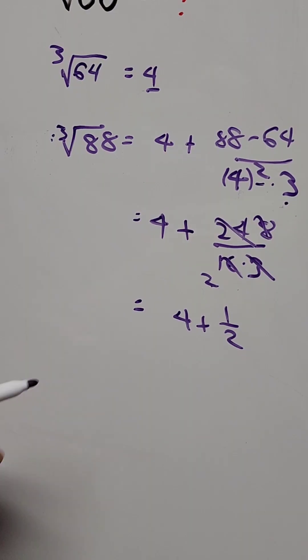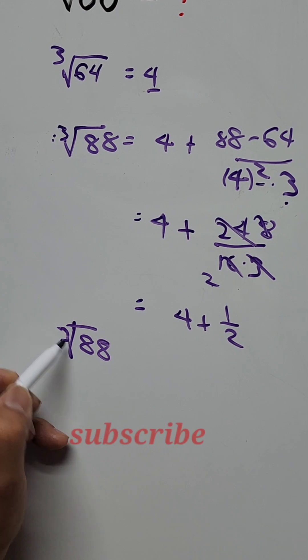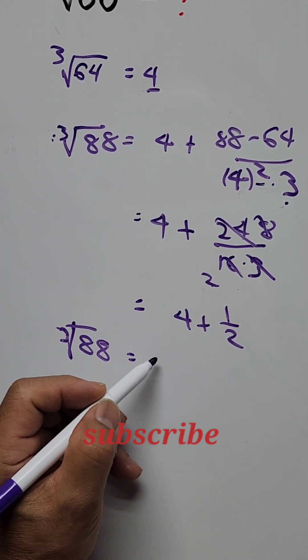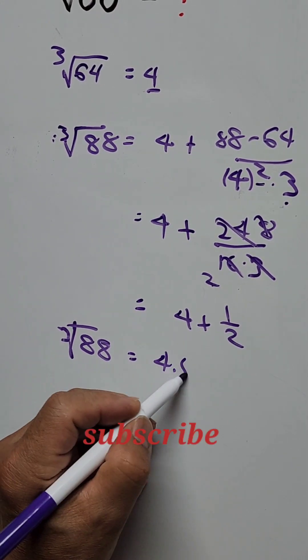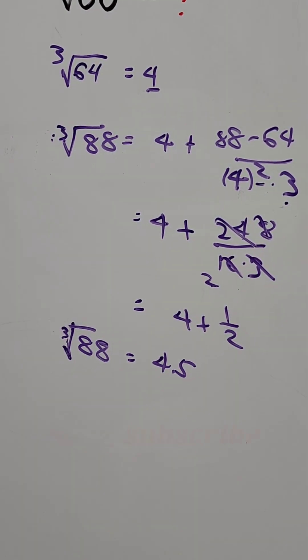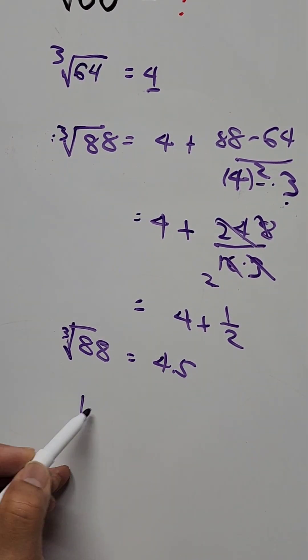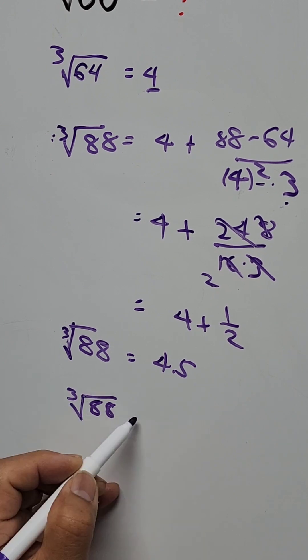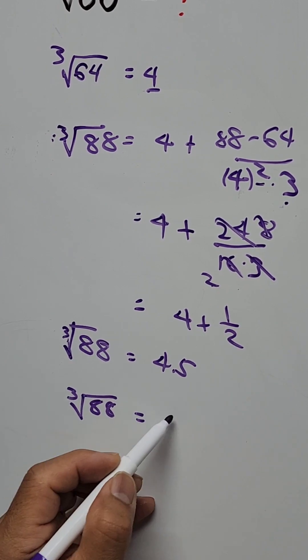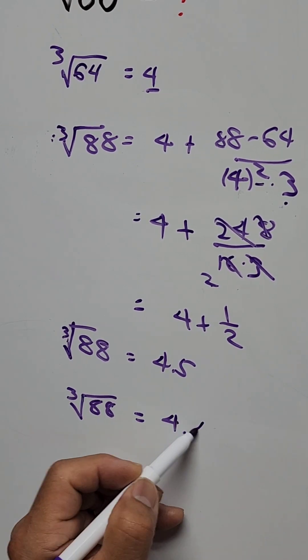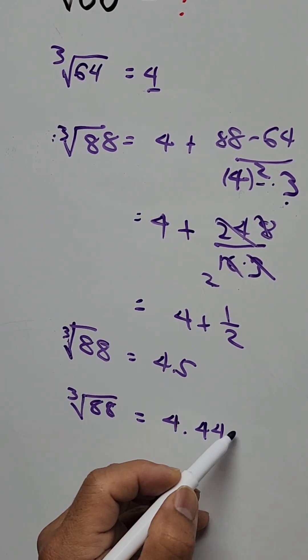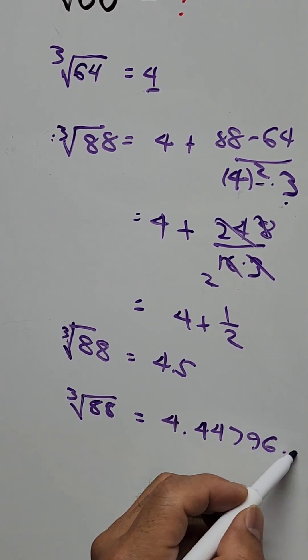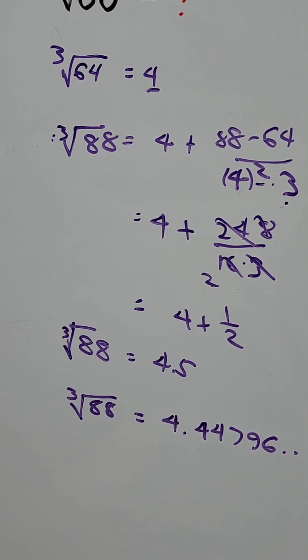So the cube root of 88 is approximately 4.5. Using a calculator, the cube root of 88 is equal to 4.44796, and so on.